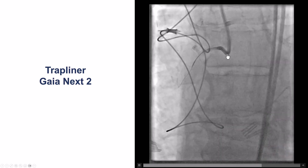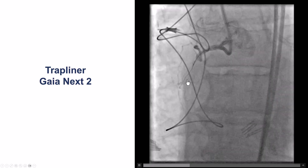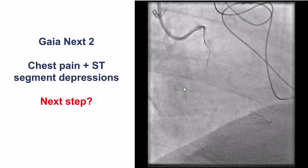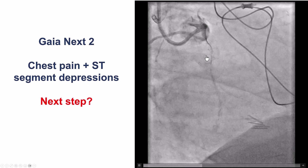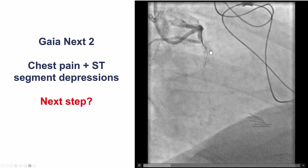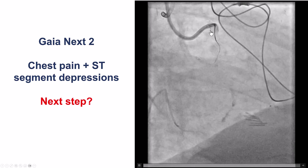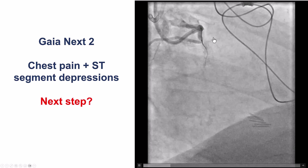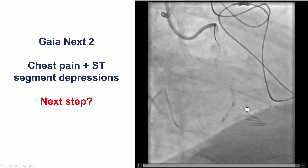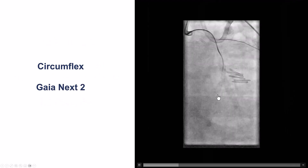We used the guide extension, AL1 guide, and then in multiple projections tried to advance along the course of the vessel. This is a Gaia X2. Orthogonal views, and although this does seem to go in the right direction, the patient did have significant chest discomfort and ST segment depressions, likely because of compromise of flow into this marginal branch. So what to do next?